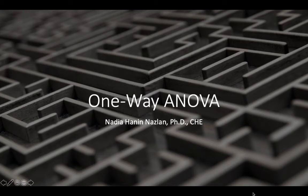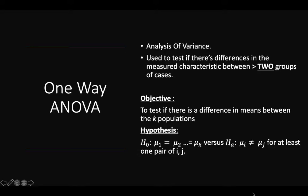Hello and Assalamualaikum. In this video, we are going to be talking about the one-way ANOVA. ANOVA is a short form for analysis of variance. We use it when we have more than two groups — just as we use a t-test to compare means of two groups, ANOVA is used to test if there are differences in measured characteristics between more than two groups. The objective is to test if there is a difference in means between the K populations, where K is the number of groups or levels.